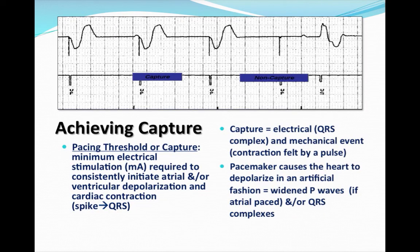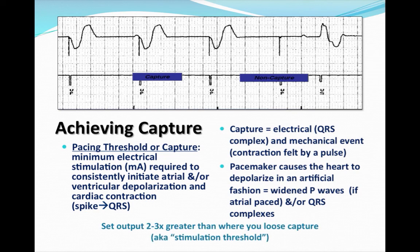Once the pacemaker is in the heart, we want 100% capture — a pacer spike followed by a wide QRS with ventricular pacing. In the picture above, you can see a pacer spike and wide QRS for three beats, then a pacer spike with no wide complex. That means the output or milliamps is not high enough to achieve capture 100% of the time. The output should be set two to three times greater than where we lose capture — this is called the stimulation threshold.